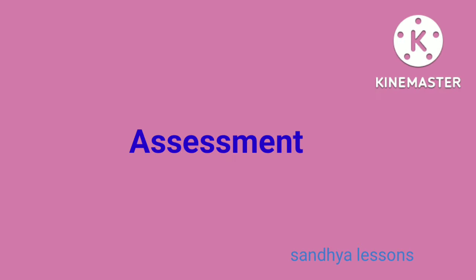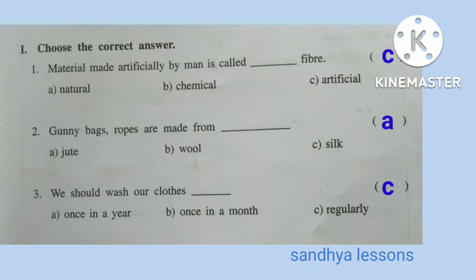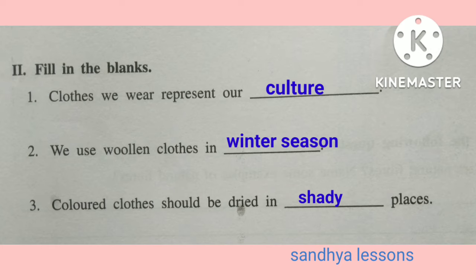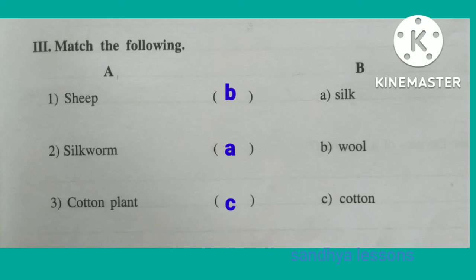Assessment. First, choose the correct answer: Material made artificially by man is called artificial fiber. Gunny bags and ropes are made from jute. We should wash our clothes regularly. Second, fill in the blanks: Clothes we wear represent our culture. We use woolen clothes in winter season. Clothes should be dried in shady places. Third, match the following: Sheep — Wool, Silkworm — Silk, Cotton Plant — Cotton.